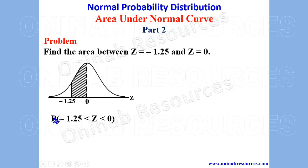This is written as P of negative 1.25 less than z less than 0. And also be informed that this 0 line is symmetrical because it is a line that divides the curve into two equal halves.